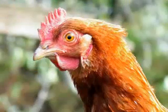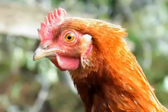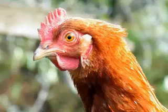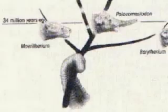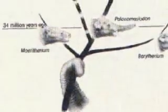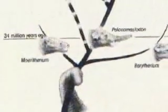Chickens, for example, don't have teeth, but their distant ancestors did, and the code for it is still buried in their DNA. Activate the right gene, and you get a chicken with teeth. One of the commonest misconceptions about evolution is that we never find a transitional form between one species and another.